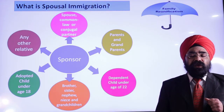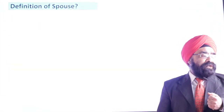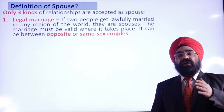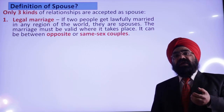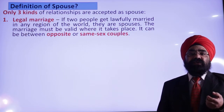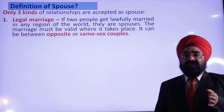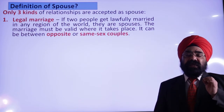The definition of spouse may be different from what we have in our home country. As per Canadian law, only three types of relationships are considered as spouse. The first is legal marriage. Legal marriage is when you go to a Gurdwara, church, mosque, or any other place and get married, or you go to court and obtain a legal marriage certificate. There is a little twist here: back home it may be a marriage between opposite sex, but Canadian law also considers same-sex marriages and same-sex couples.